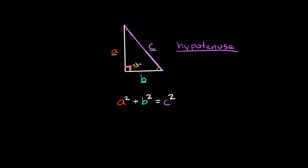It's completely opposite — they're on opposite sides. The other way you can think about it is it's the side that isn't touching the right angle, the 90 degree angle. Because as you can see, the A side is touching the 90 degree angle, and the B side is also touching the 90 degree angle. So it's the side that doesn't touch the 90 degree angle.